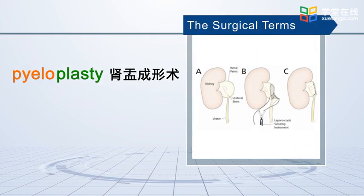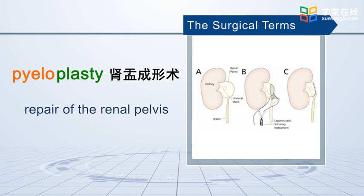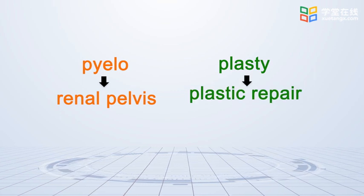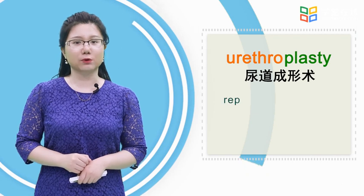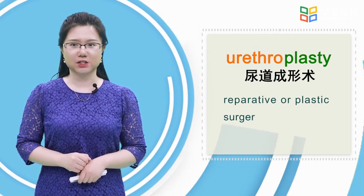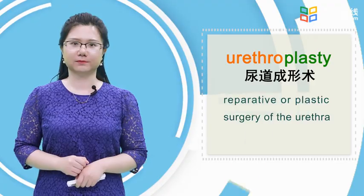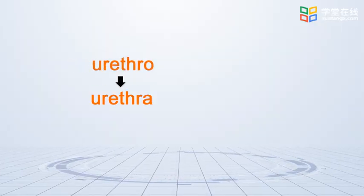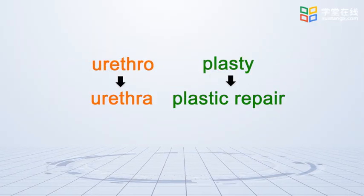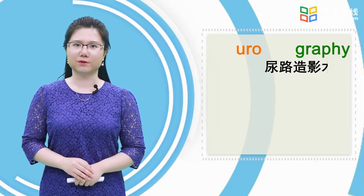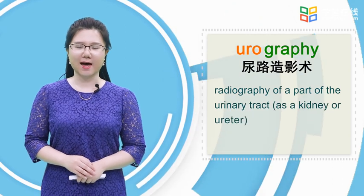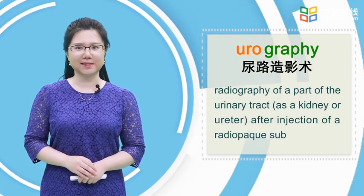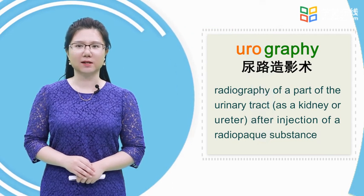Pyeloplasty means repair of the renal pelvis. Urethroplasty means reparative or plastic surgery of the urethra. Urography means radiography of a part of the urinary tract, such as a kidney or ureter, after injection of a radiopaque substance.